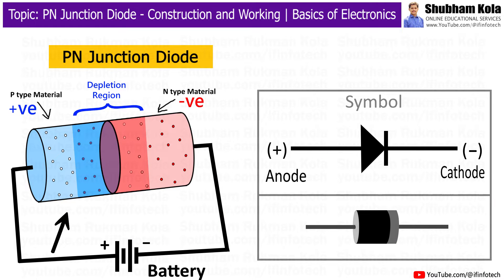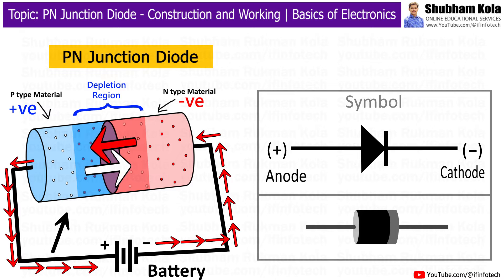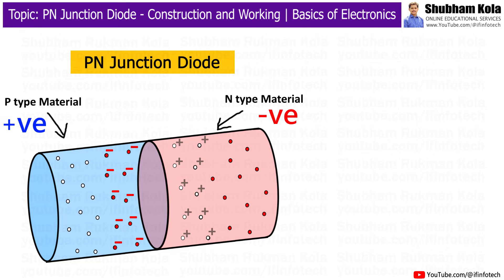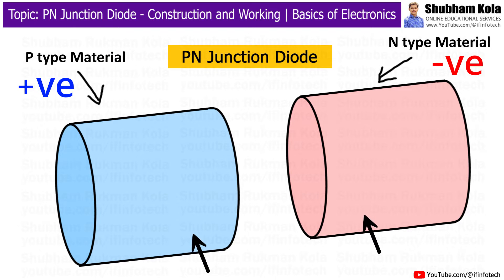In this video, we are going to learn about the construction and working of a P-N Junction Diode. First, let's understand what a P-N Junction Diode is. To do this, we need to know two key terms: P-Type Material and N-Type Material.